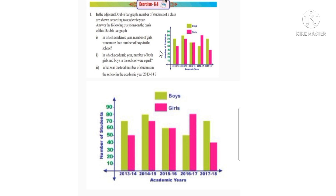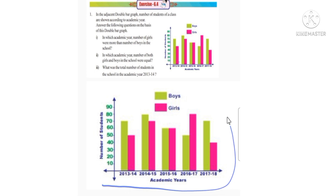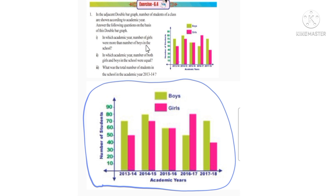Answer the following questions on the basis of this double bar graph. A figure and a double bar graph are given here. Observe the double bar graph and we will answer the questions. Now, in which academic year were the number of girls more than the number of boys?